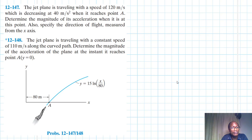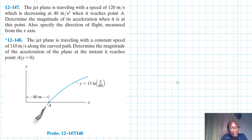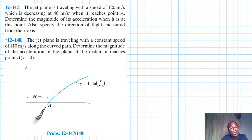In the second problem, the jet plane is traveling with a constant speed of 110 meters per second along the curved path. Determine the magnitude of the acceleration of the plane at this distance when it reaches point A, where y is equal to zero. Both these problems are from Engineering Mechanics Dynamics, 14th edition by R.C. Hibbeler.